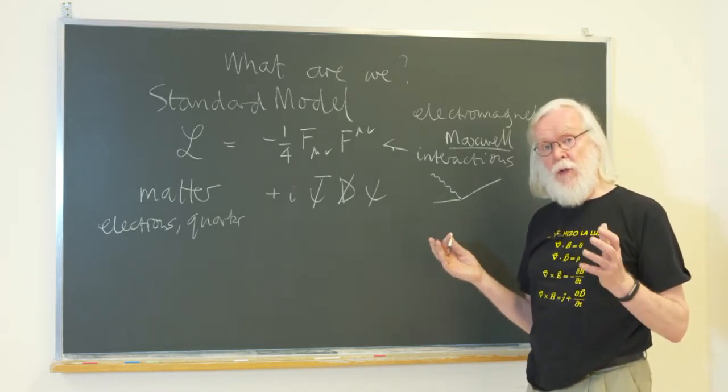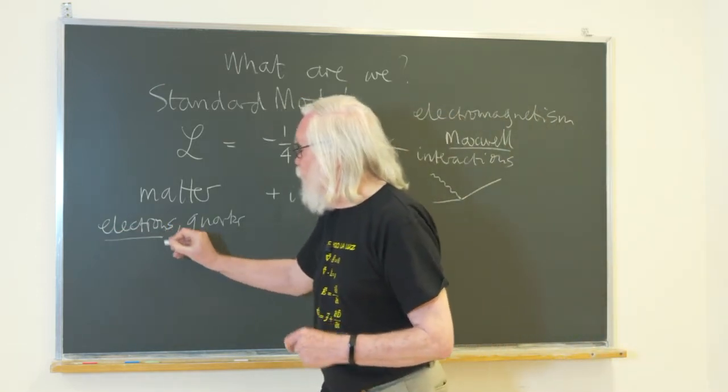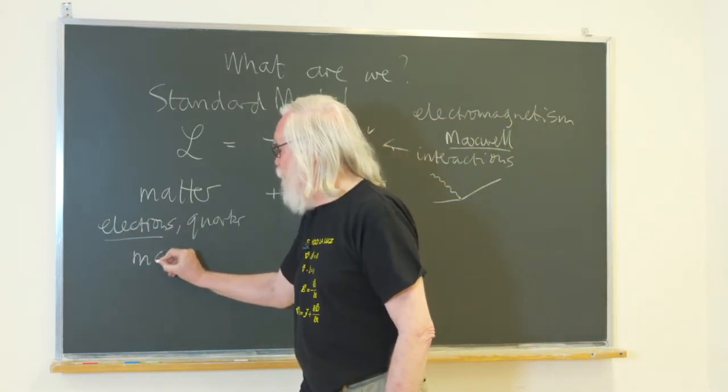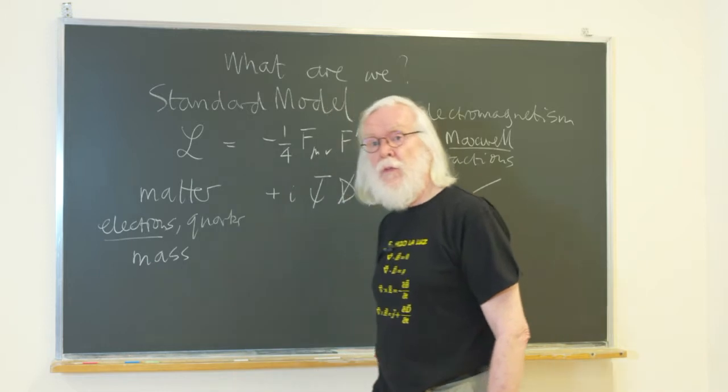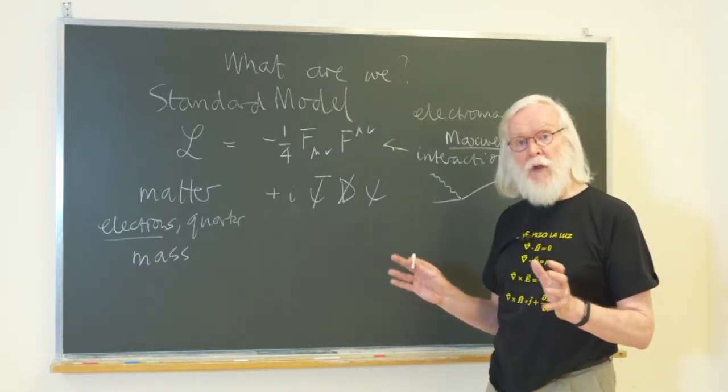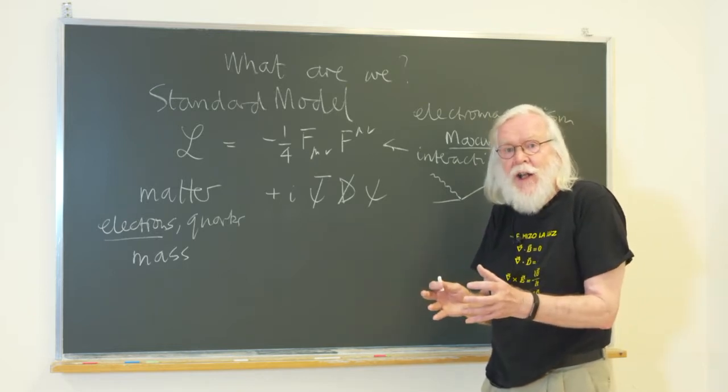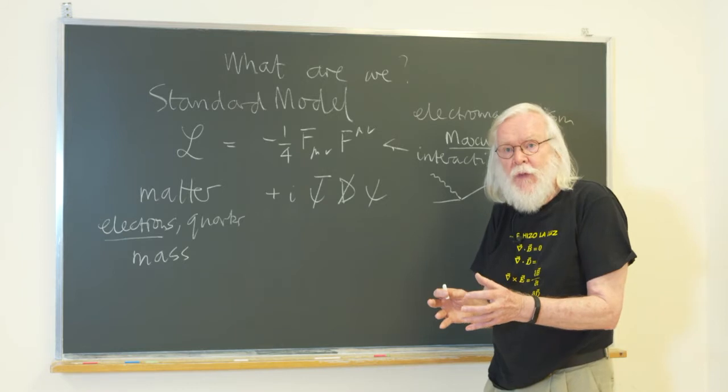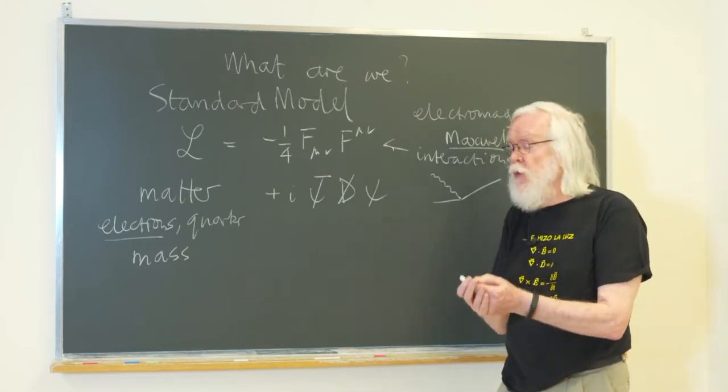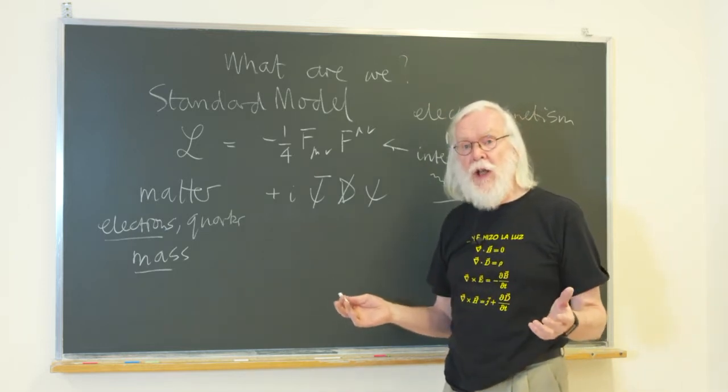Now, there's a problem at this point. We know that electrons have a mass. If they didn't have a mass, they would always travel at the speed of light and would never stick around with nuclei to form atoms. So in order to form atoms, we need a mass for the electron. How do we do that?